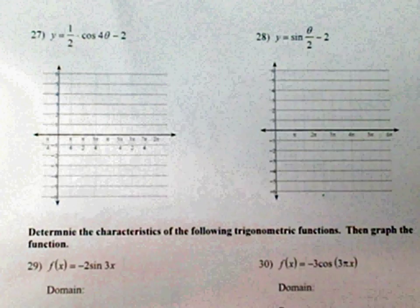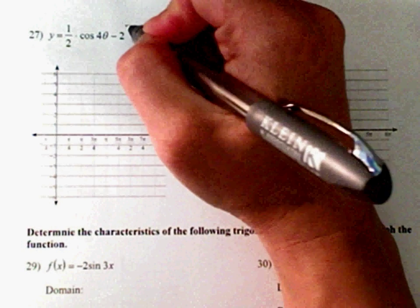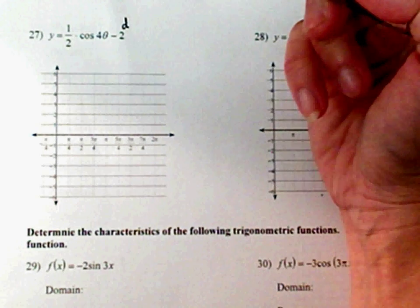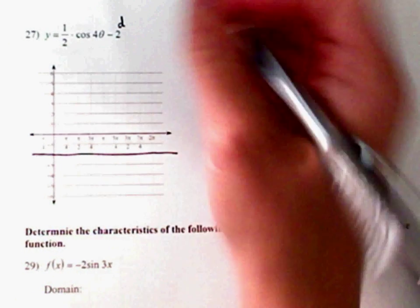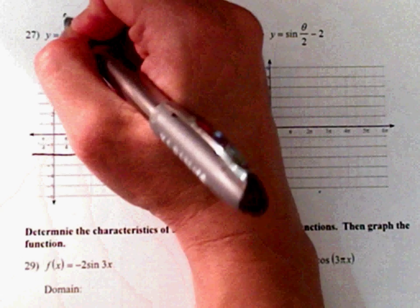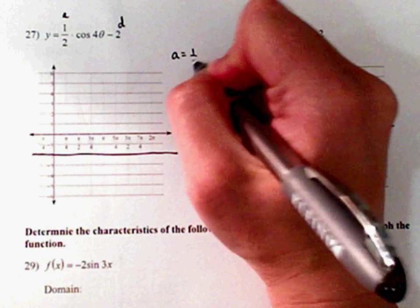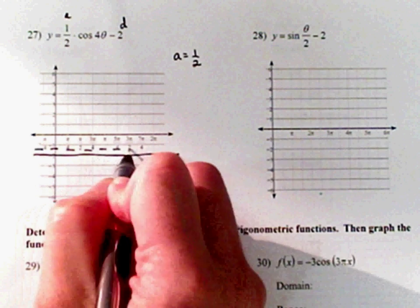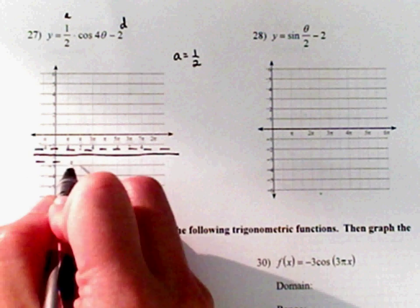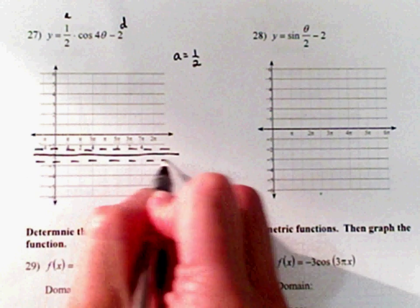Alrighty, so now let's take a look. Your D is a negative 2, so that means your midline is at negative 2, and your A, your amplitude, is 1 half. So I'm going to go up a half, and I'm going to go down a half, just like that.